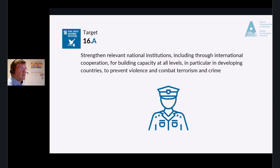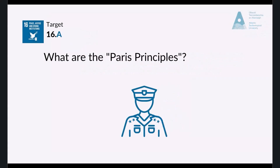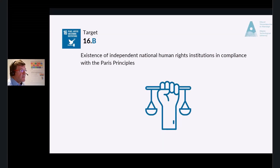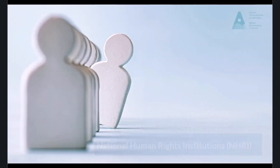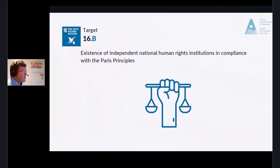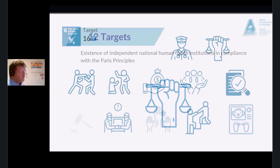Target 16A: Strengthen relevant national institutions through international cooperation for building capacity at all levels, in particular in developing countries, to prevent violence and combat terrorism and crime. The indicator for this is the existence of independent national human rights institutions in compliance with the Paris Principles — a set of international standards which frame and guide the work of human rights institutions. Target 16B: The indicator is the proportion of population reporting having personally felt discriminated against or harassed in the previous 12 months on the basis of a ground of discrimination prohibited under international human rights law.